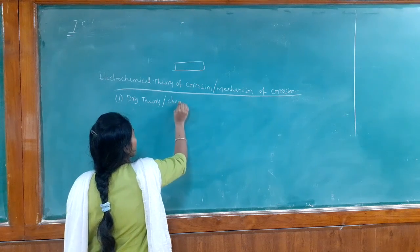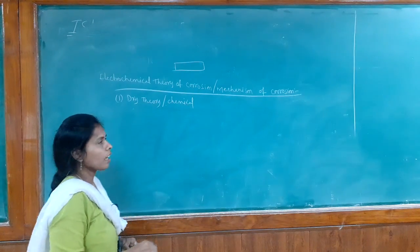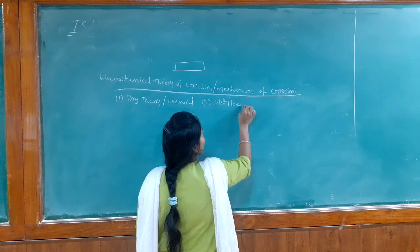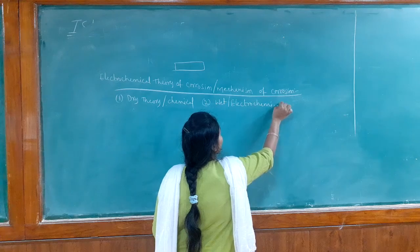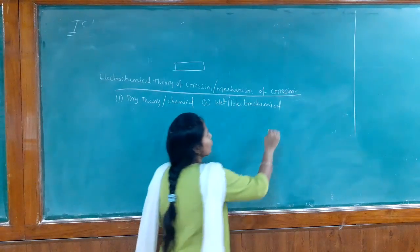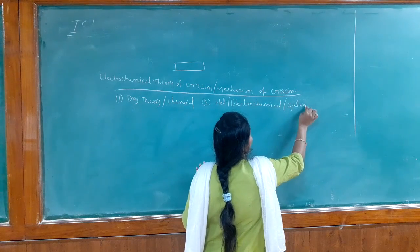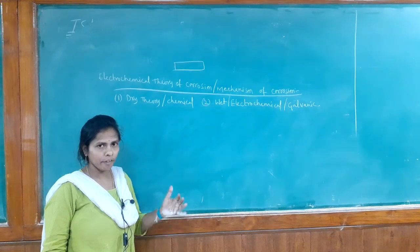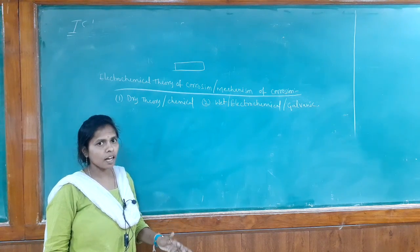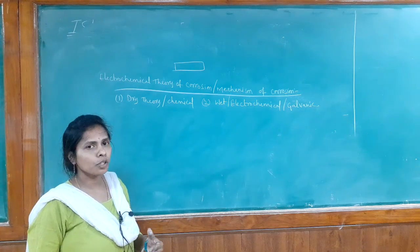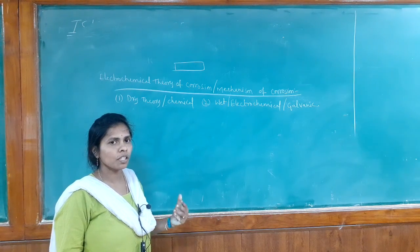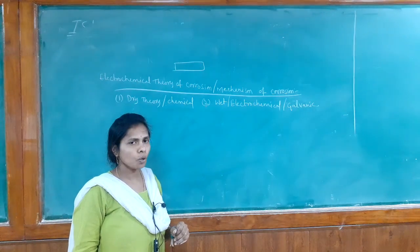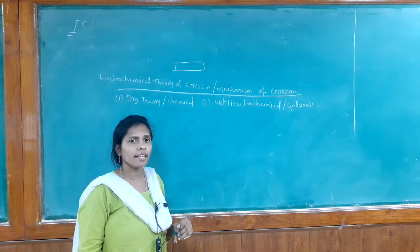Dry theory of corrosion is also called chemical corrosion. The second type is wet corrosion, which is also called electrochemical corrosion, and it is also called galvanic corrosion. So based on the medium — either presence or absence of moisture — we have two types of theories: dry theory (chemical corrosion) and wet theory (electrochemical or galvanic corrosion).